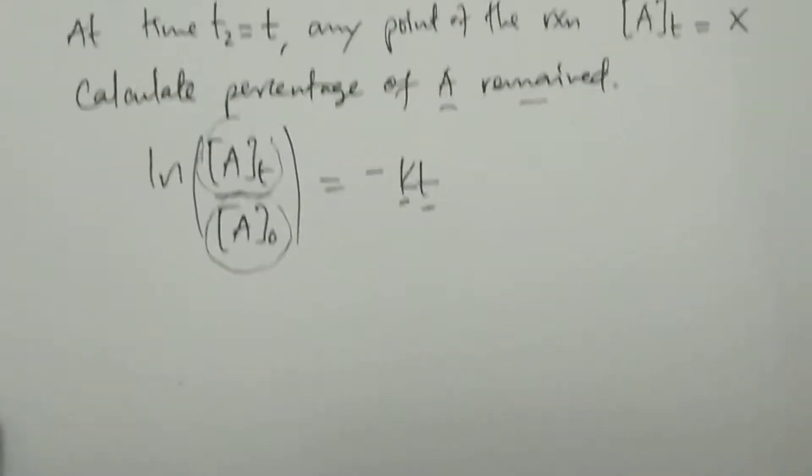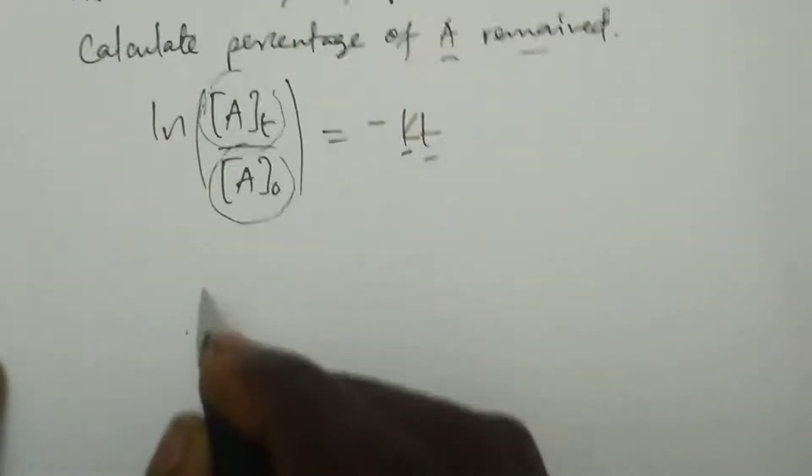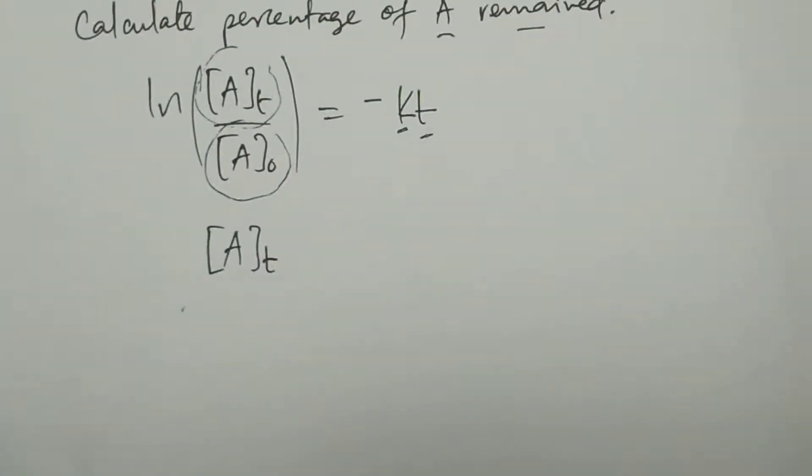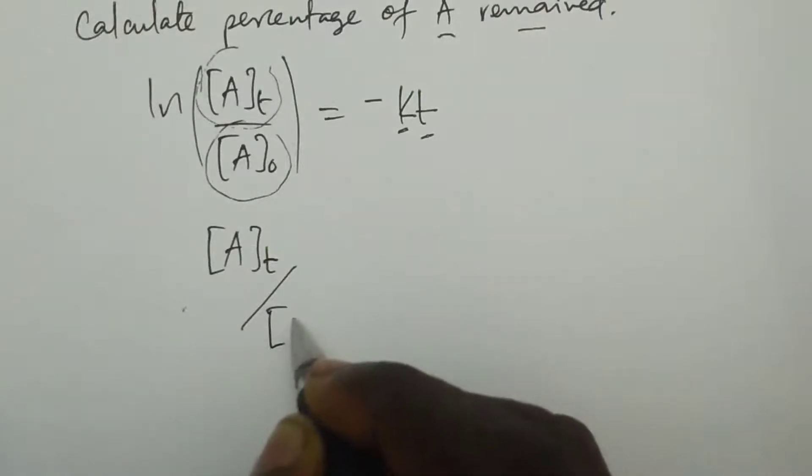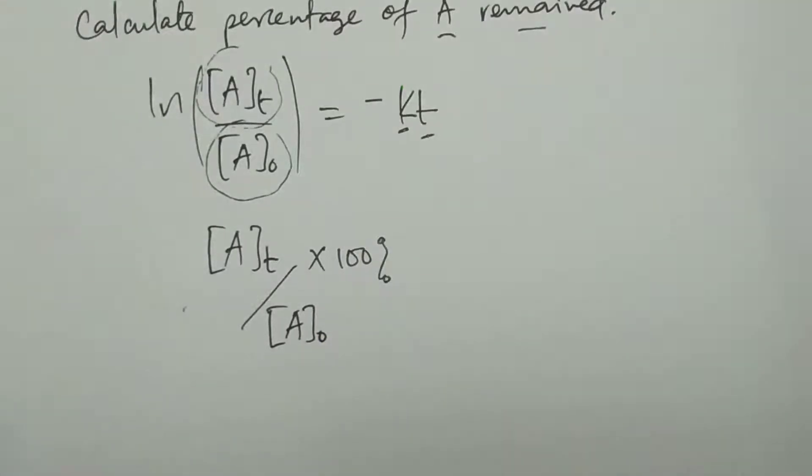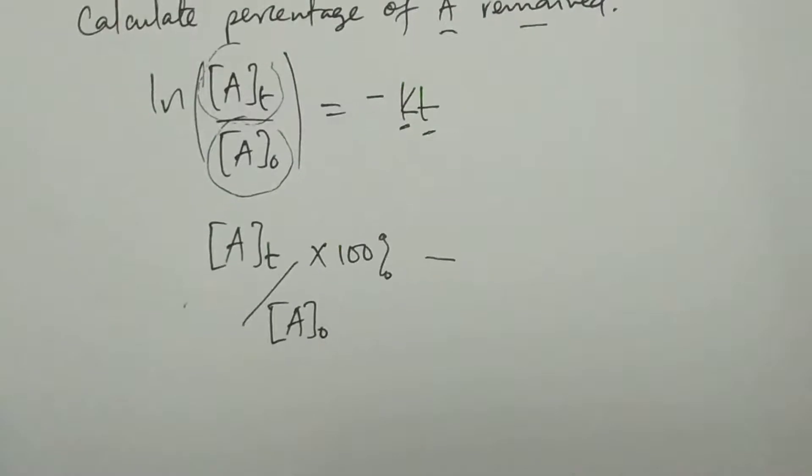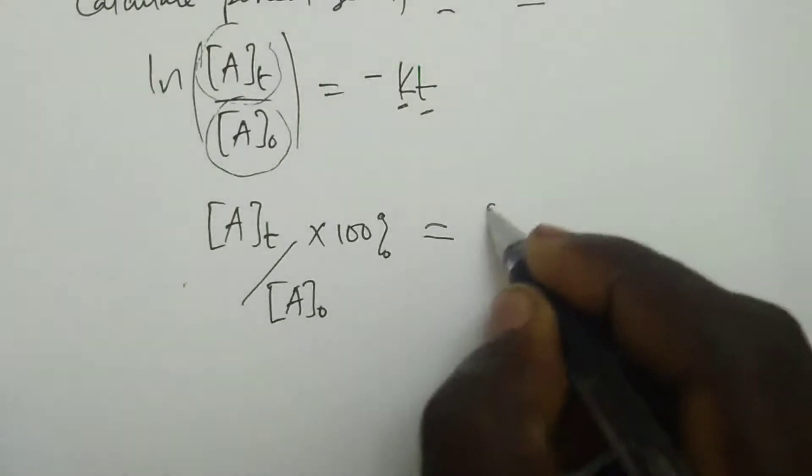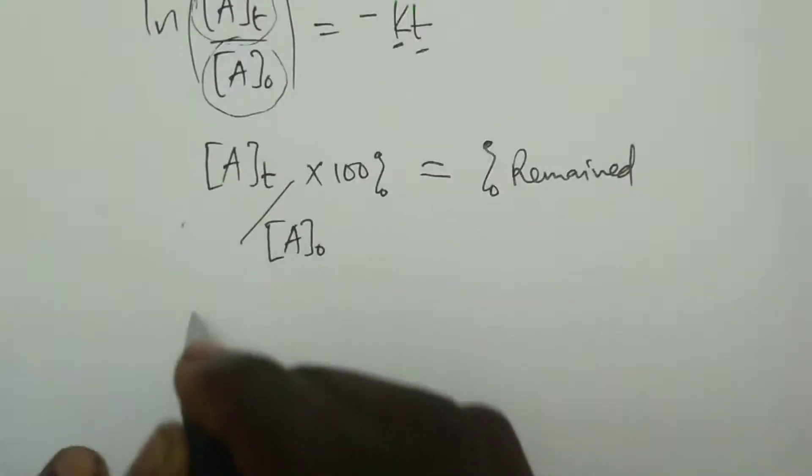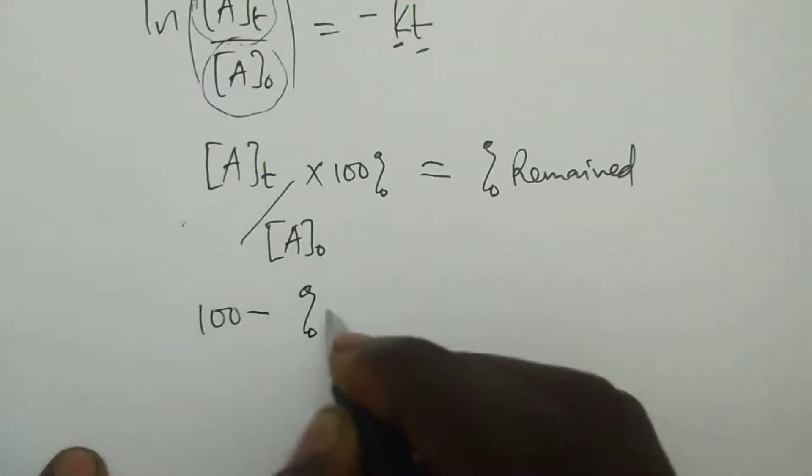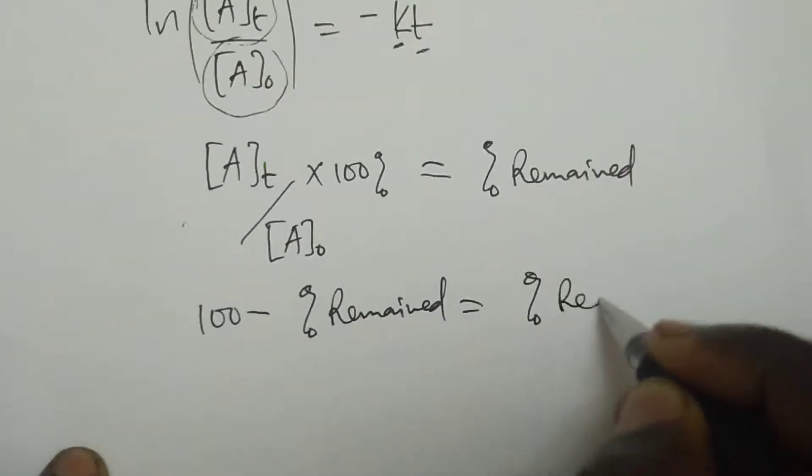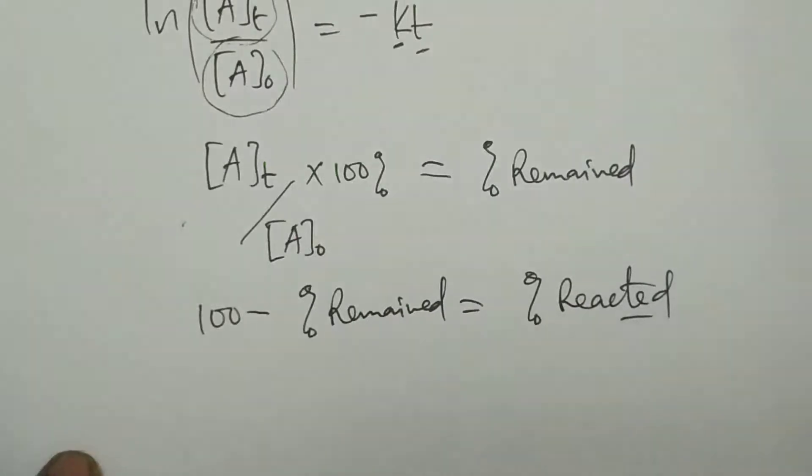The percentage of A remained is: concentration AT divided by concentration A₀, times 100 percent. To calculate percentage reacted, take 100 minus percentage remained. This equals percentage reacted.